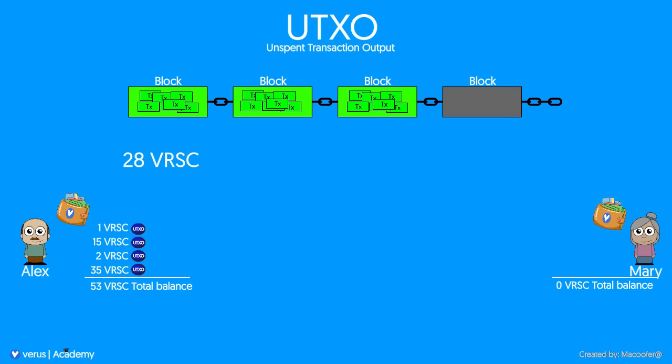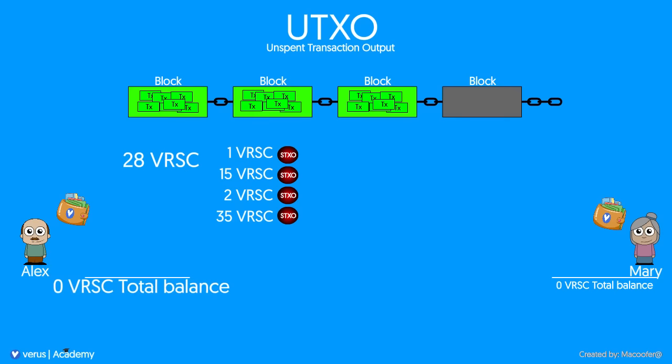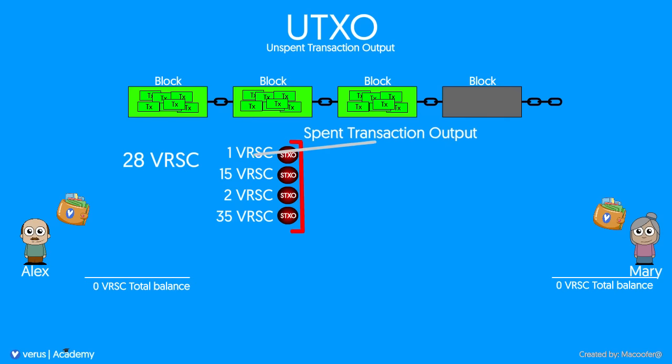The Verus wallet will try to use the smallest UTXO values first in order to fill a desired coin transaction size. In this case, it needs all four UTXOs to get to 28. When Alex sends the transaction, all four UTXOs will be spent and turn into STXOs — spent transaction outputs. This is just a background process and you will never see it.